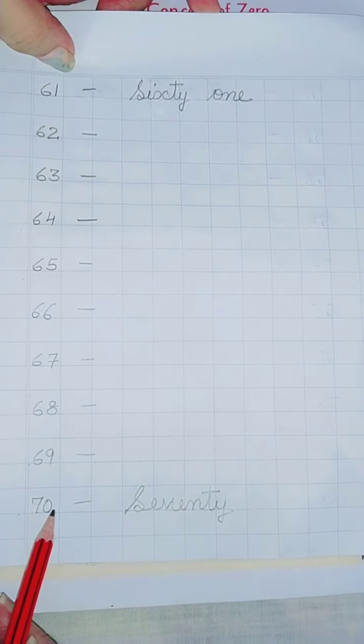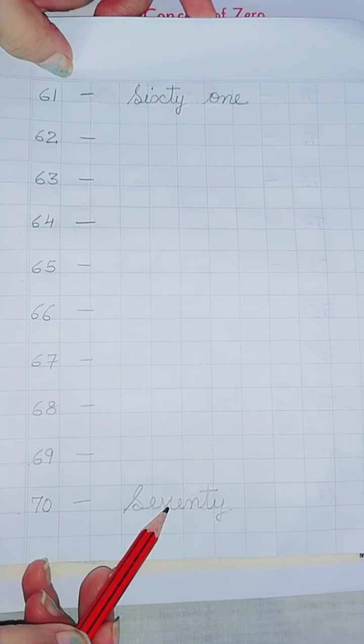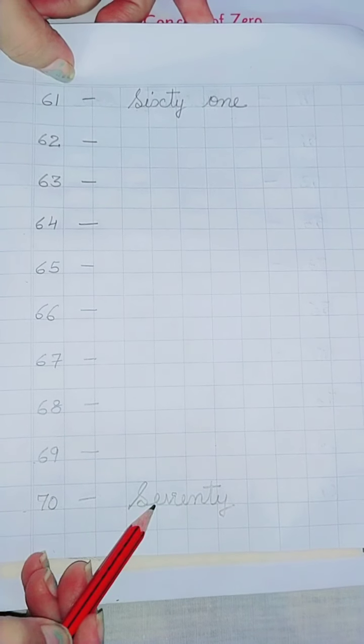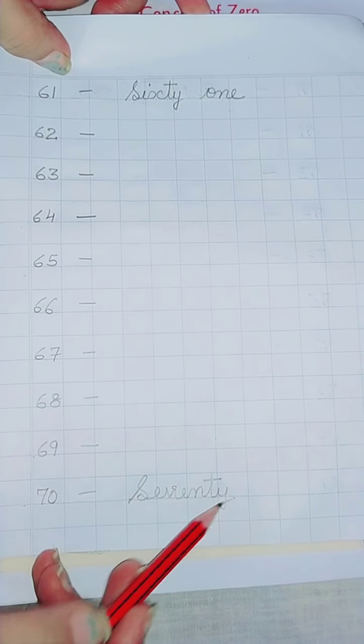And now the spelling of 70, S-E-V-E-N-T-Y, 70.